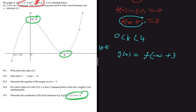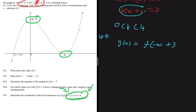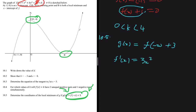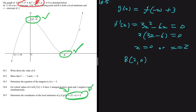The local maximum of f(x) is at point C and the local minimum is at point B. To find the coordinates of B, we set f'(x) = 0: 3x² - 6x = 0. Factoring: x(3x - 6) = 0, giving x = 0 or x = 2. Since x = 0 corresponds to point C, point B has x = 2. Since B is an x-intercept, its coordinates are (2, 0).